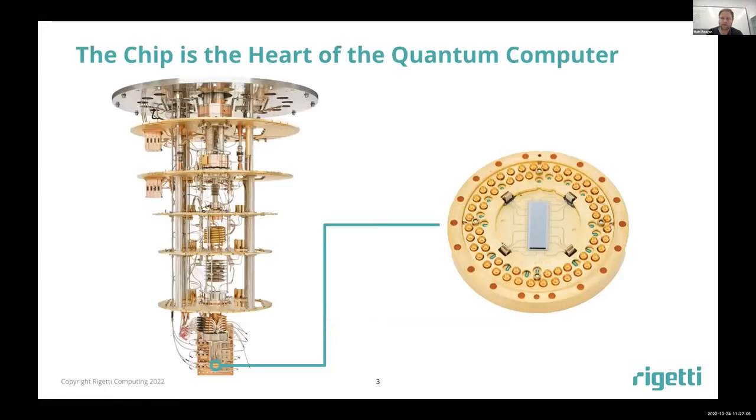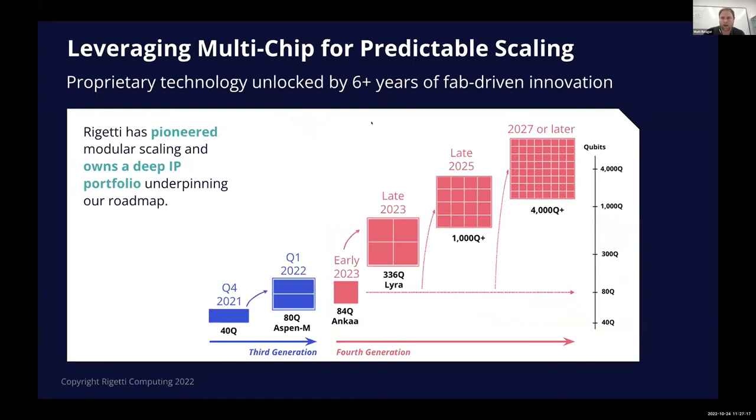So Rigetti, for those who don't know, we do superconducting quantum processors. We make our own chips down in Fremont, and then we integrate those in our data center in Berkeley, just down the hill from NERSC. Our public roadmap, as shown here, just last year we transitioned from a single chip 40 qubit system to our first multi-chip platform. Our 80 qubit processor that's online today has two nominally identical copies of our earlier generation 40-q chip.